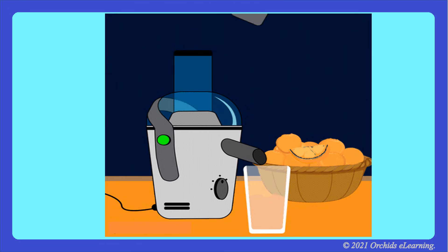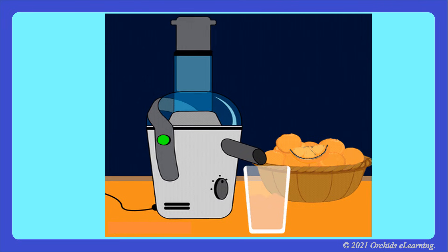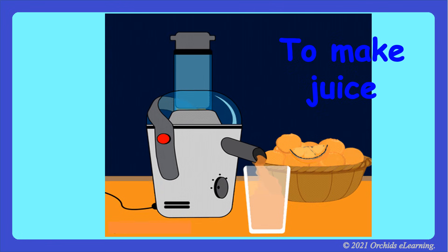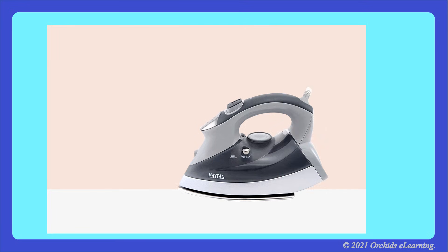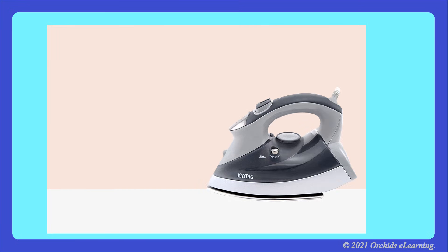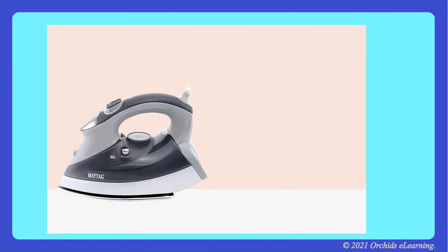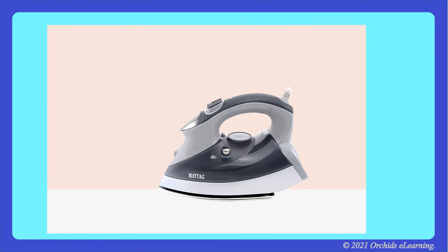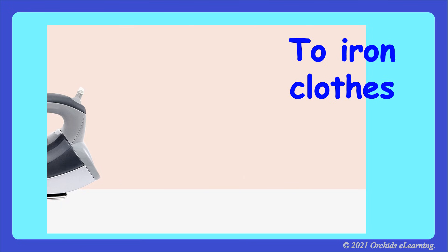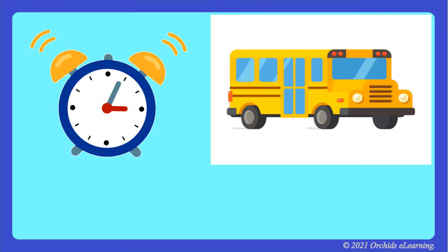It is a juicer. What is the use of a juicer? To make fruit juice. Next, this is iron. What is the use of iron? It is used to iron our clothes.